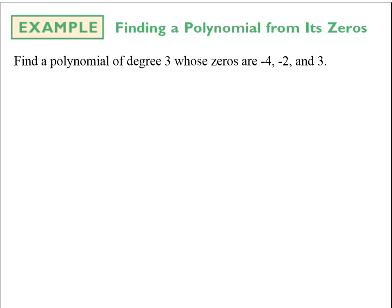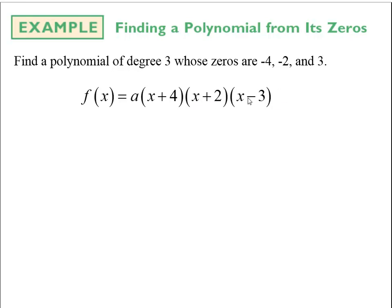For example, to find a degree 3 polynomial with zeros at negative 4, negative 2, and 3: if negative 4 is a zero, the factor x plus 4 must be present; similarly x plus 2 and x minus 3. So the polynomial in factored form is a times (x plus 4)(x plus 2)(x minus 3). The leading coefficient a doesn't change which values are zeros, only the scale and end behavior.